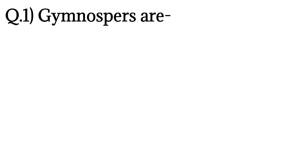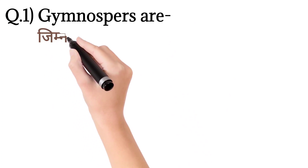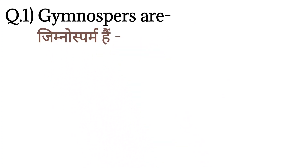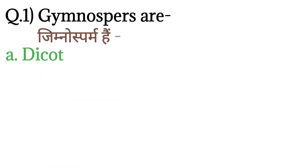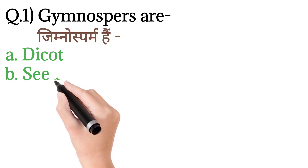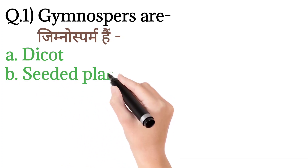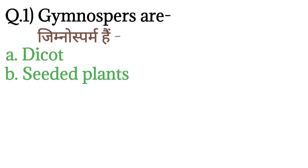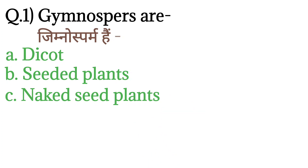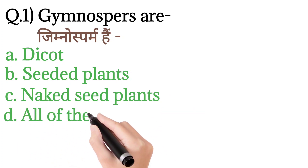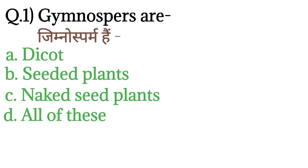Gymnosperms are — gymnosperm hain, kya hoti hain gymnosperm? Iske liye option A hai: Dicot. Option B: Seeded plants. Option C: Naked seed plants. And option D: All of these.